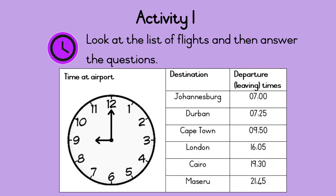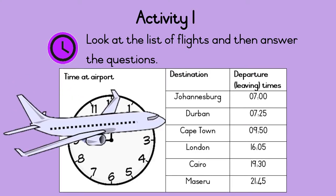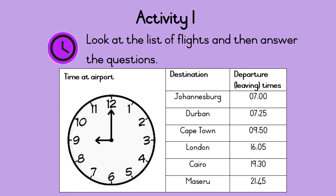Activity 1. Look at the list of flights, and then answer the questions. This shows the current time at the airport. This shows the destination of the airplane. And this shows what time the airplane is leaving.